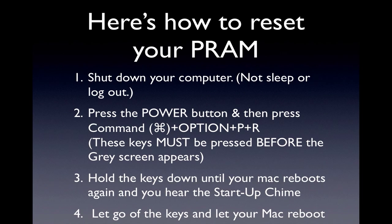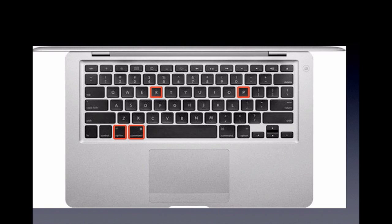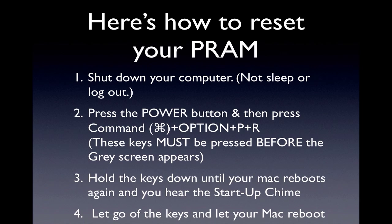Here's how to reset your PRAM. First, shut down your computer — don't just put it to sleep or log out. Next, press the power button, and then press Command, Option, P, and R. Hold all those keys down together, and you must press those keys before the gray startup screen appears. Hold those keys down until your Mac reboots again and you hear the startup chime. Let go of the keys and let your Mac reboot. You've just reset your PRAM.